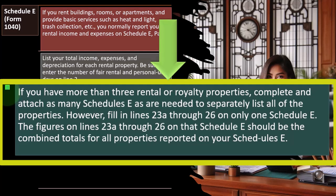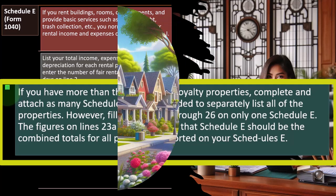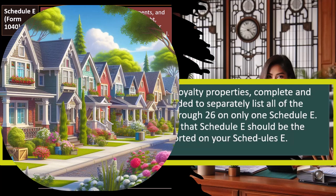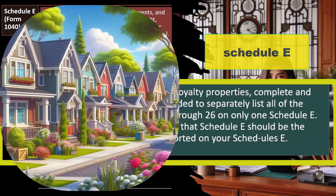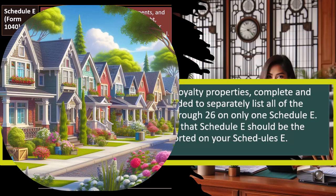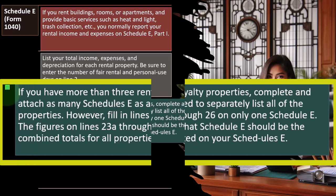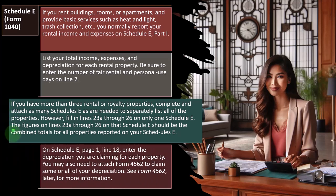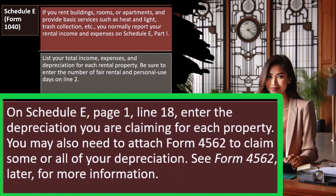Lines 23A through 26 on only one Schedule E should show the combined totals of all properties reported. So if you have five properties, their individual income statements are summed at the bottom of the Schedule E, since they're all subject to the same passive rules. On Schedule E, page 1, line 18, enter the depreciation you're claiming for each property, listing each property separately according to when it was purchased and its cost or basis.